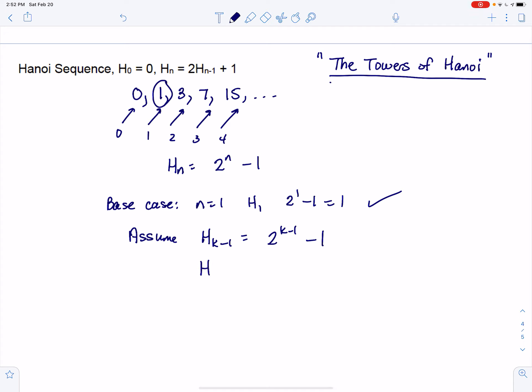Then H sub K, which is equal to 2H sub K minus 1 plus 1, is equal to 2 times 2 to the K minus 1 minus 1 plus 1. Which is 2 times 2 to the K minus 1 minus 2 plus 1.